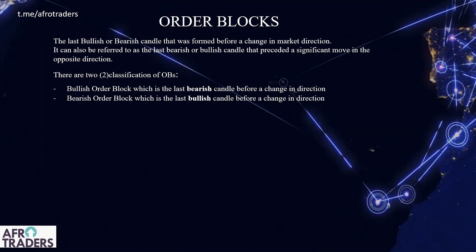From ICT, we know that an order block results from the last bullish or bearish candle that was formed before the change in market direction — the last bearish or bullish candle before we see a significant move in the opposite direction. So we have two order blocks: the bullish order block and the bearish order block.